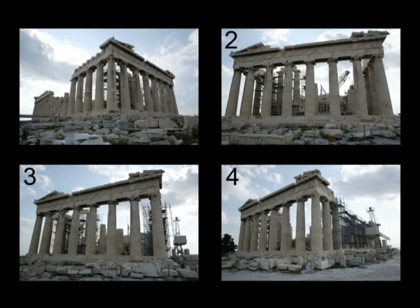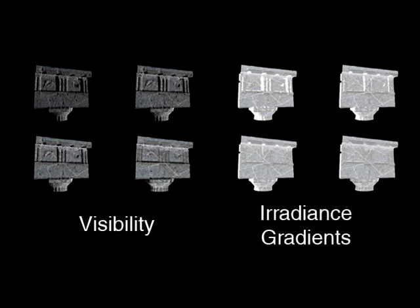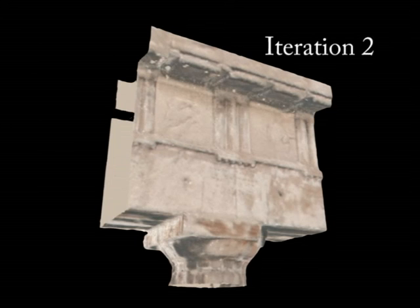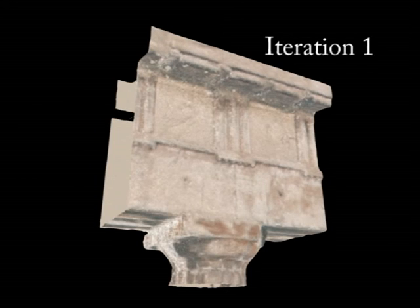This process is repeated for all photographs viewing the voxel, and the reflectance properties are averaged together, weighted according to visibility and irradiance gradients. Once all voxels have been updated, the process is repeated to account for the resulting changes in indirect illumination, with a complete process requiring approximately 10 minutes of computation per voxel.